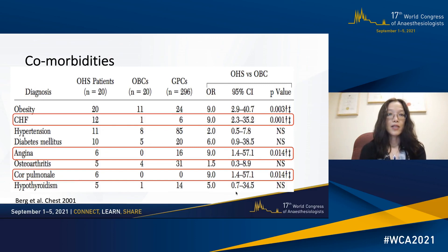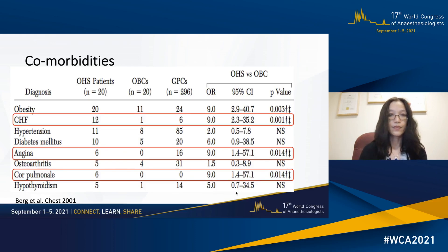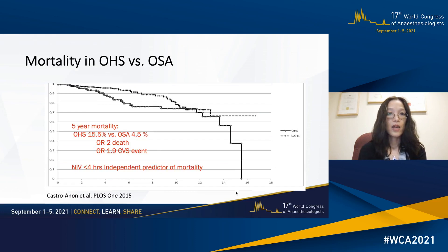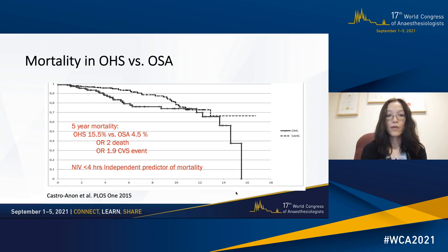OHS is associated with significant comorbidities. In this study, they compared patients with OHS versus obese controls and found that patients with obesity hypoventilation syndrome had a nine-fold increased risk for congestive heart failure, angina, and cor pulmonale. When compared to patients with OSA, patients with OHS are at increased risk for mortality — over five years, the odds ratio of death was two times higher in patients with OHS compared to patients with OSA.